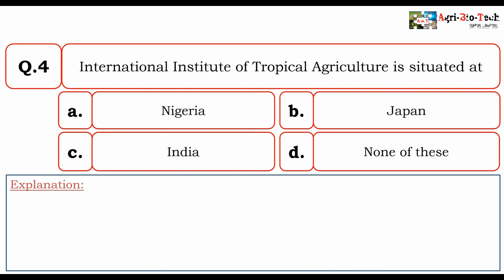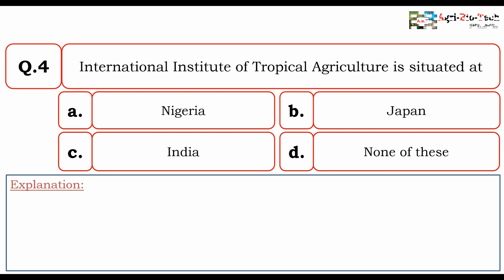Next question: International Institute of Tropical Agriculture is situated at? The options are A. Nigeria, B. Japan, C. India, and D. None of these. The correct option is A. Nigeria.